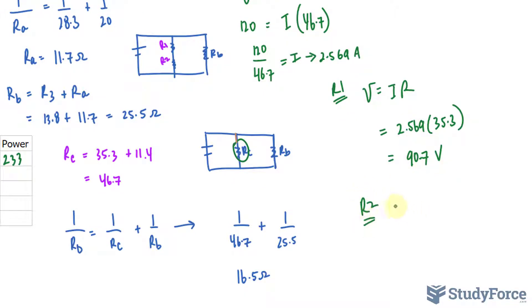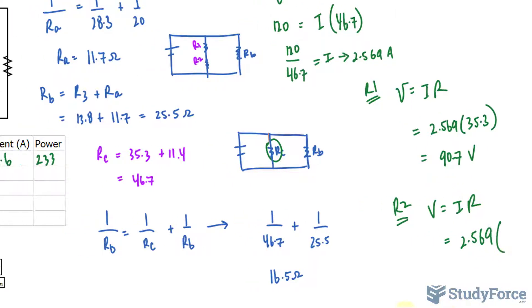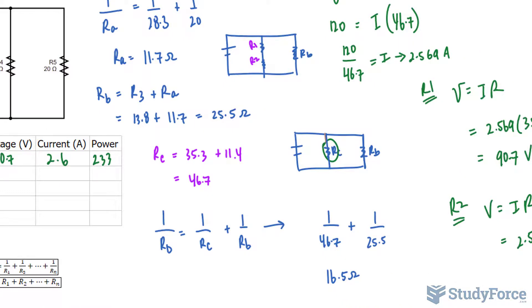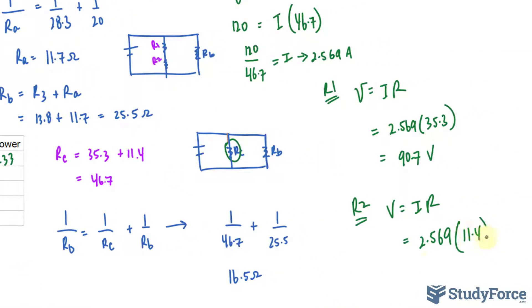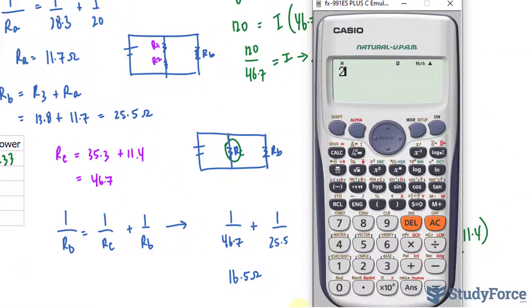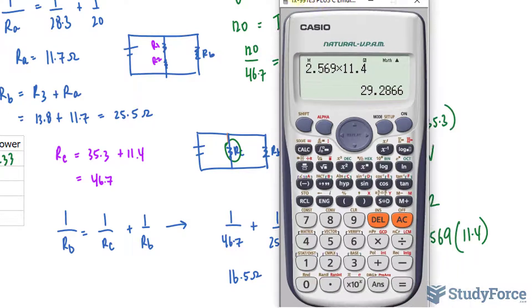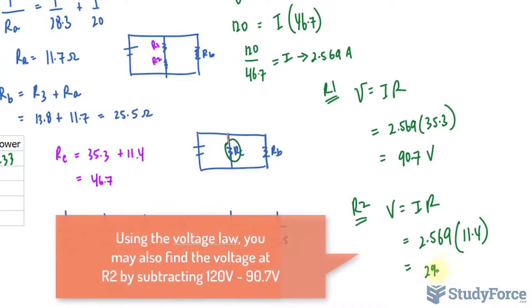For R2, V equals IR. Again, 2.569 is the current flowing down, and the resistance for R2 is 11.4. Let's multiply these out. 2.569 times 11.4 is 29.28.